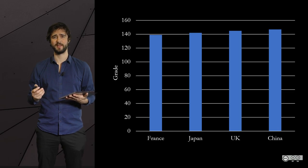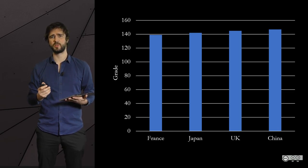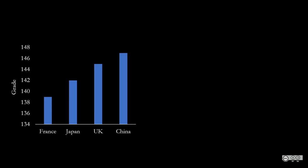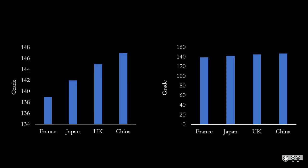you will probably tend to believe that there are very significant differences among the groups, won't you? But have you closely looked at the y-axis? It's not starting from zero, is it? Now, let's plot exactly the same data, but with the y-axis starting at zero. Here we go. You see? The differences are way less impressive, aren't they?